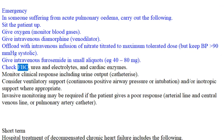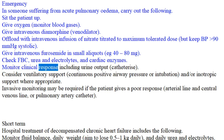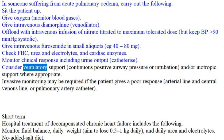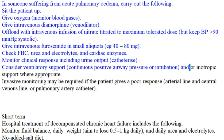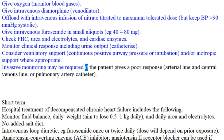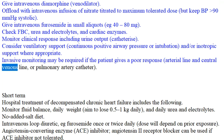Check FBC, urea and electrolytes, and cardiac enzymes. Monitor clinical response including urine output (catheterize). Consider ventilatory support — continuous positive airway pressure (CPAP) or intubation — and/or inotropic support where appropriate. Invasive monitoring may be required if the patient gives a poor response: arterial line and central venous line, or pulmonary artery catheter.